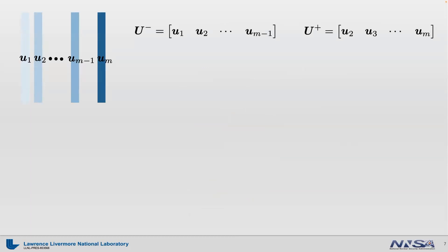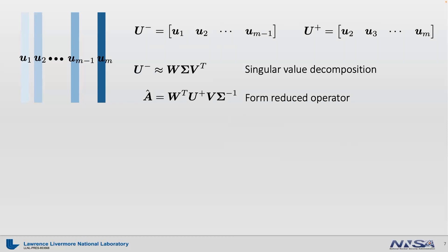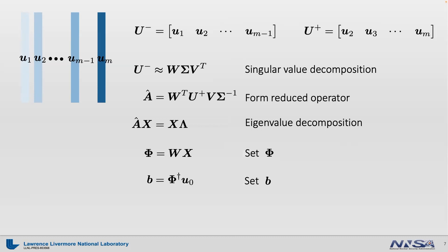That was quite a derivation, but DMD is actually a quite simple algorithm. The whole algorithm can be summarized in one page: generate time-dependent data; divide into U-minus and U-plus matrices; perform truncated SVD of U-minus; form reduced operator A-hat by multiplying the SVD matrices with U-plus; perform eigenvalue decomposition on A-hat; set phi to W times X; set B to the pseudo-inverse of phi times the initial condition u0; then use this analytical DMD solution to predict any time and space field. If you use a high-level language such as MATLAB or Python, you can implement DMD in as few as 10 or 20 lines of code.